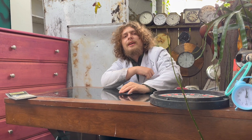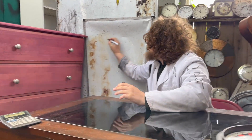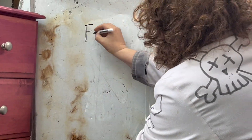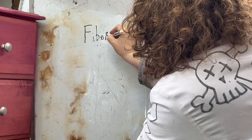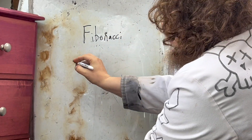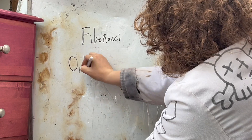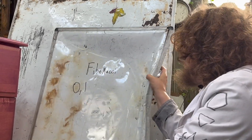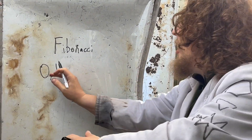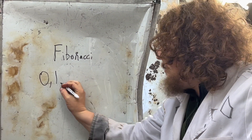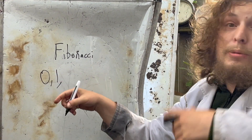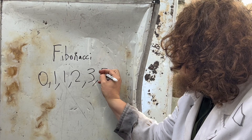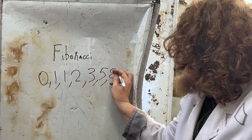The Fibonacci sequence, as many of you may already know, is a series of numbers that begins with zero, then one — or alternately one, then another one — which gets us to the same place. Each new term is the sum of the previous two from that point onward: zero plus one is one, one plus one is two, one plus two is three, those add to five, then eight, thirteen, and so on.